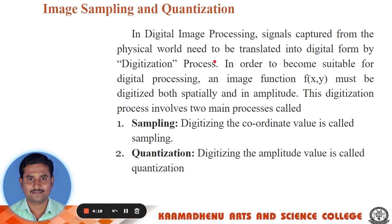When we want to process an image on a digital computer, the image must be in digital form. Initially, the image captured by the image acquisition process is in the form of an analog signal. We have to convert this analog signal into a digital signal so that we can process the image on a digital computer. By using these two techniques — sampling and quantization — we can convert the analog signal into a digital signal.